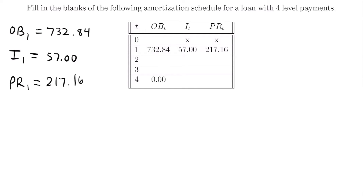How are we going to fill in any of these blanks using these three numbers? The first thing we should try to do is figure out what the outstanding balance was at time equals zero — the original loan amount being repaid with these four level payments. We have the outstanding balance at time equals one, and if we add the principal at time equals one, that amount was subtracted from the original outstanding balance. The outstanding balance at time t+1 equals the previous outstanding balance at time t minus the principal at time t+1.